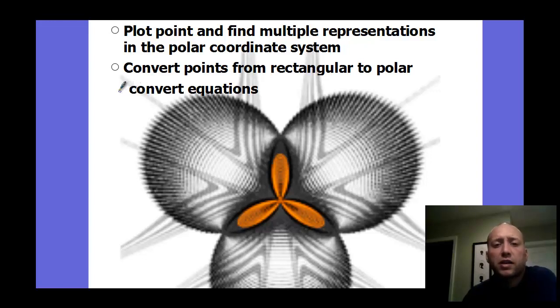Precalculus chapter 9, section 6. This is an introduction into polar graphing. We're going to be talking about plotting points and converting between rectangular to polar. Rectangular form is what we've been graphing typically. Rectangular coordinate plane has an x and a y axis and all the points are written as x comma y. That's rectangular coordinates. Polar graphing is a bit different.